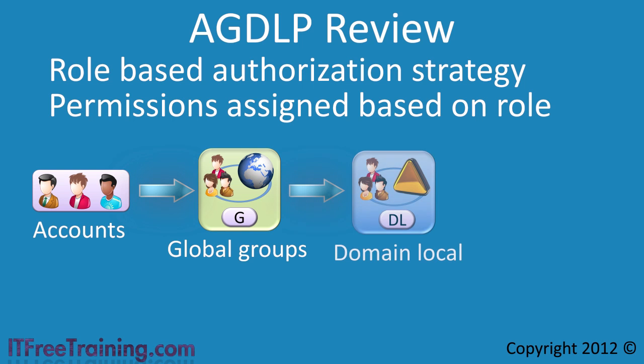Global groups are placed in domain local groups. Domain local groups can only be used in the domain that they are created in, so you can say with confidence that the group is only being used to provide access to resources in that domain. Domain local groups also allow users, computers, global groups and universal groups to be added from other domains. This allows easy auditing of the group. If you want to know who has access to a particular resource, look at the members of the domain local group and this will tell you.